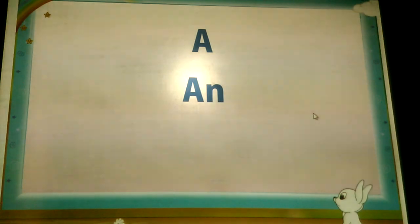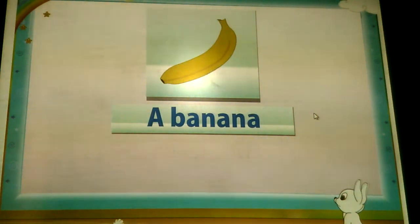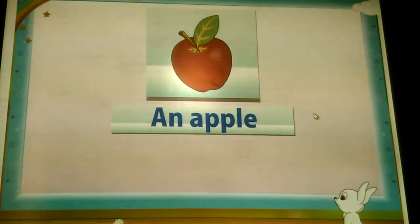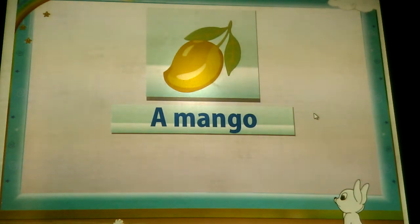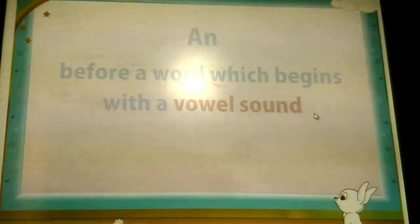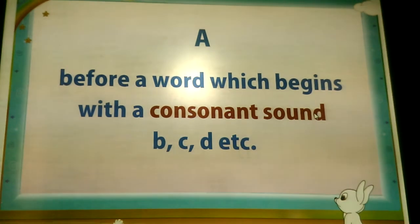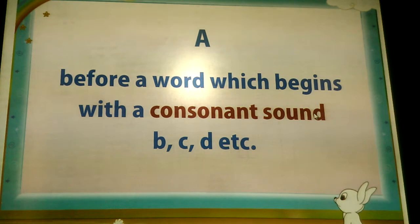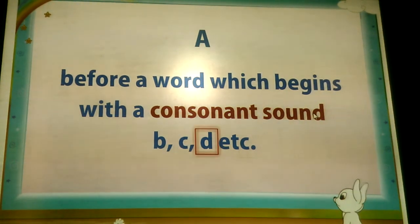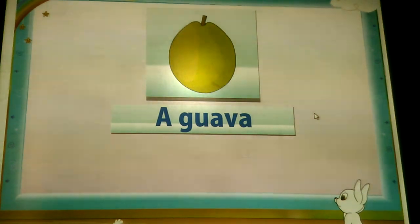We use both 'a' and 'an' when we speak of one person or one thing. We say: an orange, a banana, an apple, a guava, a mango. The difference is we use 'an' before a word which begins with a vowel sound. So we say: an orange, an apple. We use 'a' before a word which begins with a consonant sound. And we say: a banana, a guava, a mango.